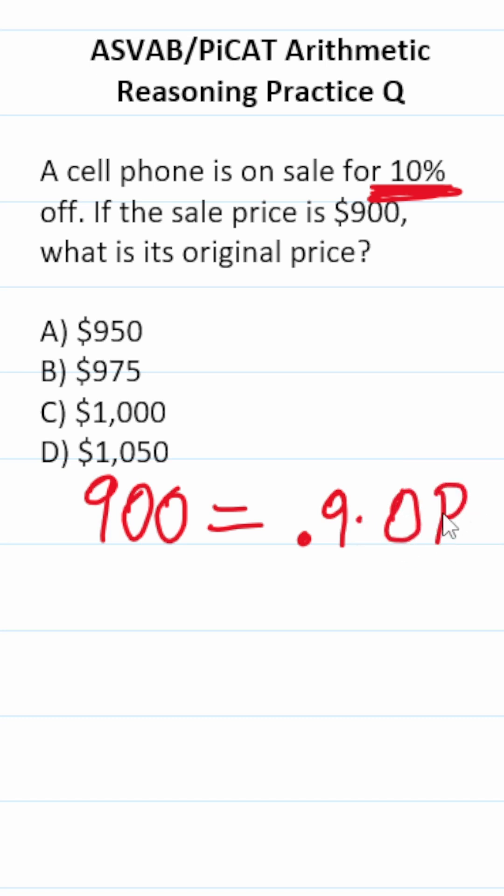its original price. So to solve for original price, we're just going to divide both sides by 0.9. This crosses out, leaving you with the original price over here.